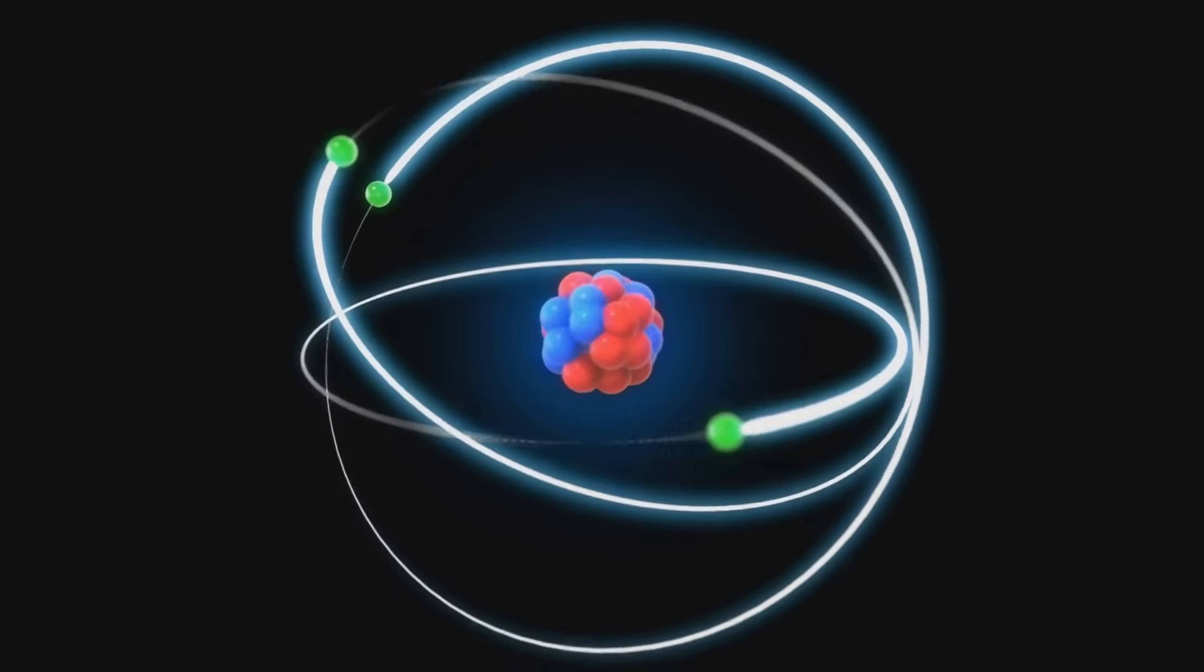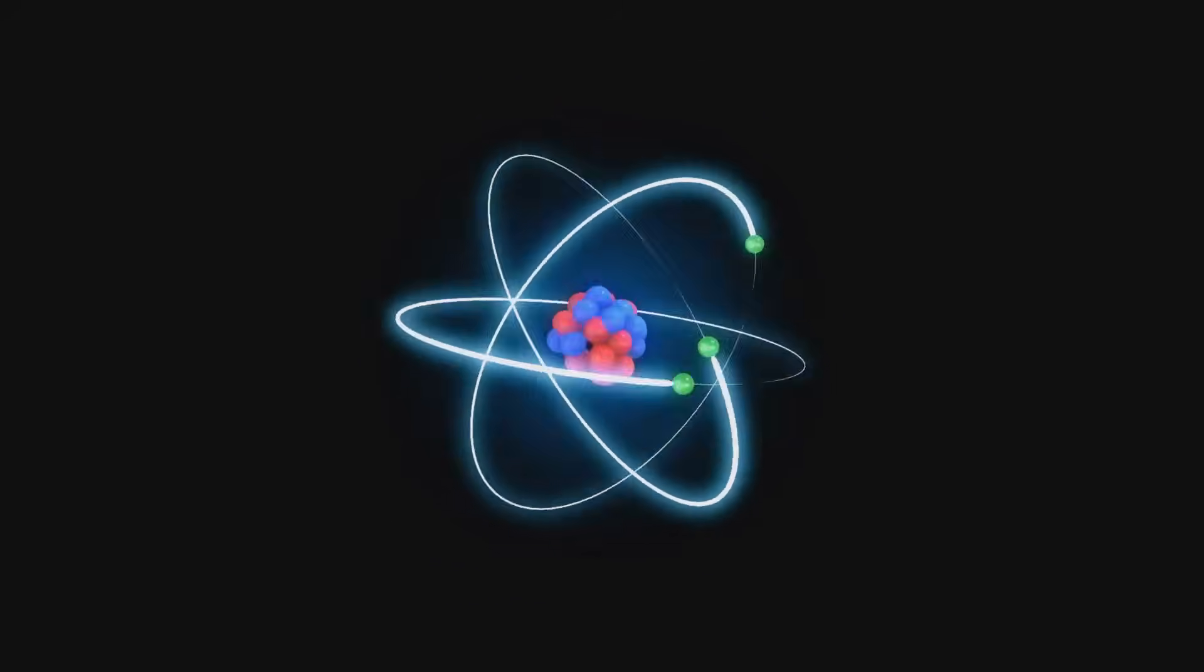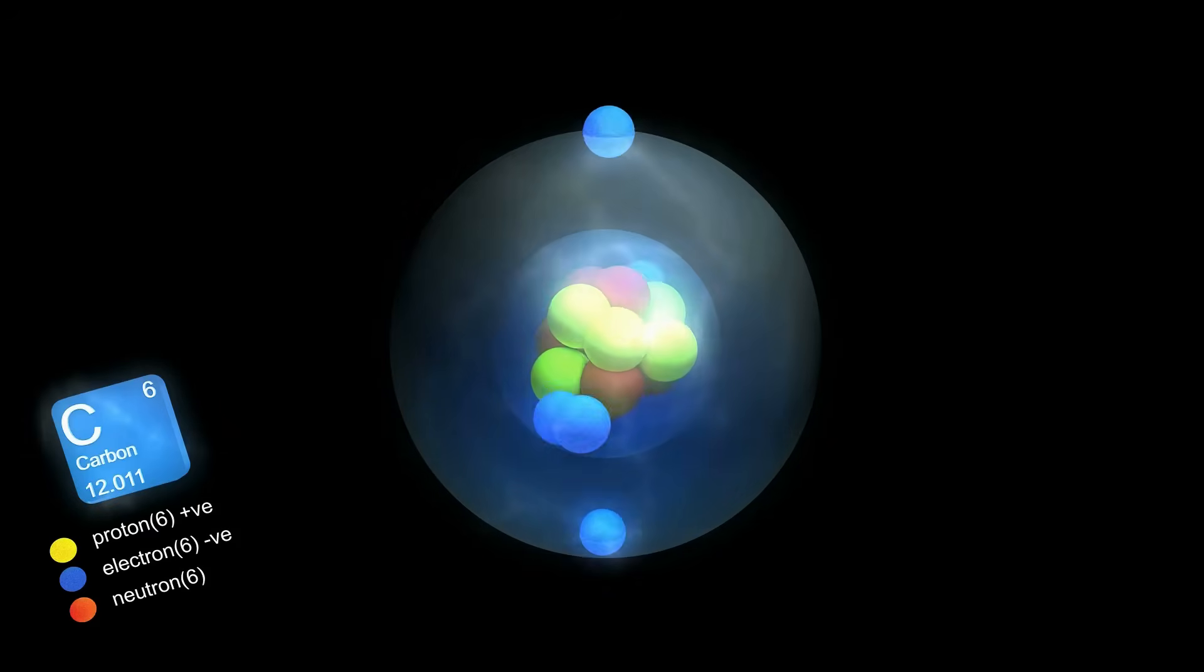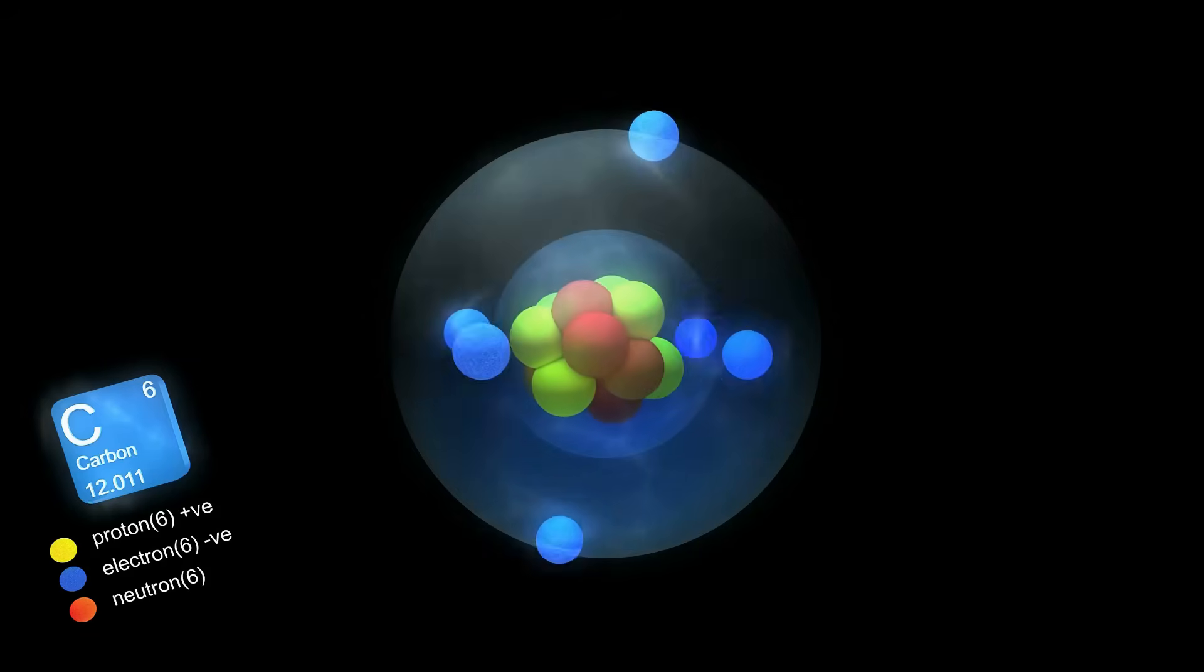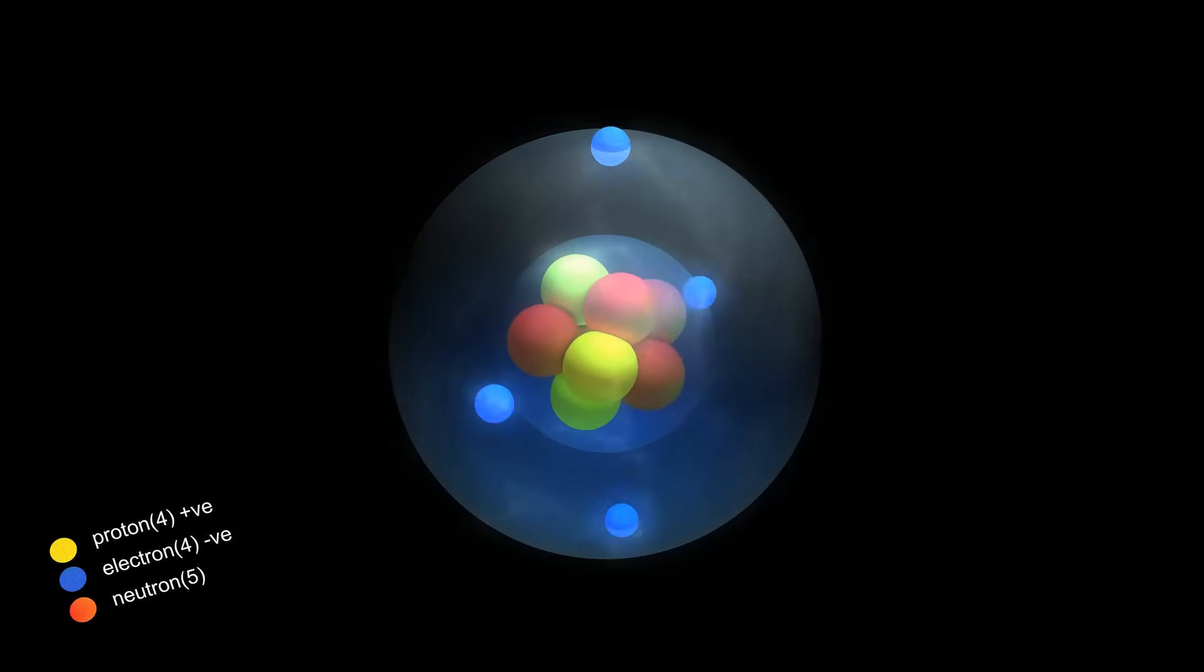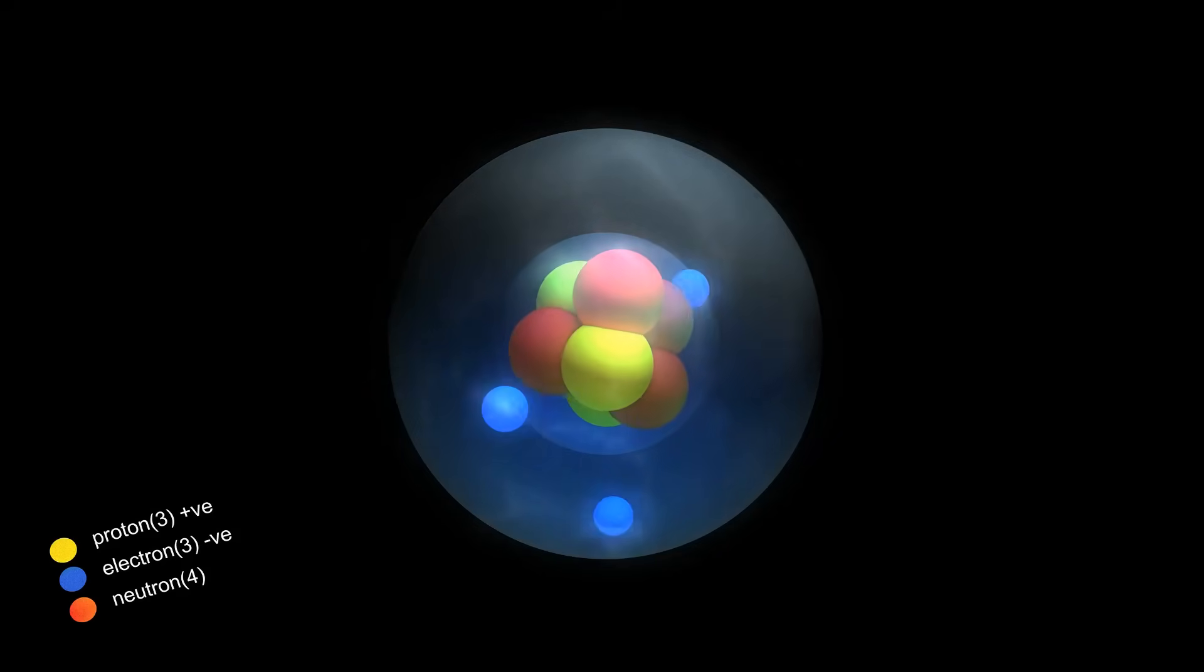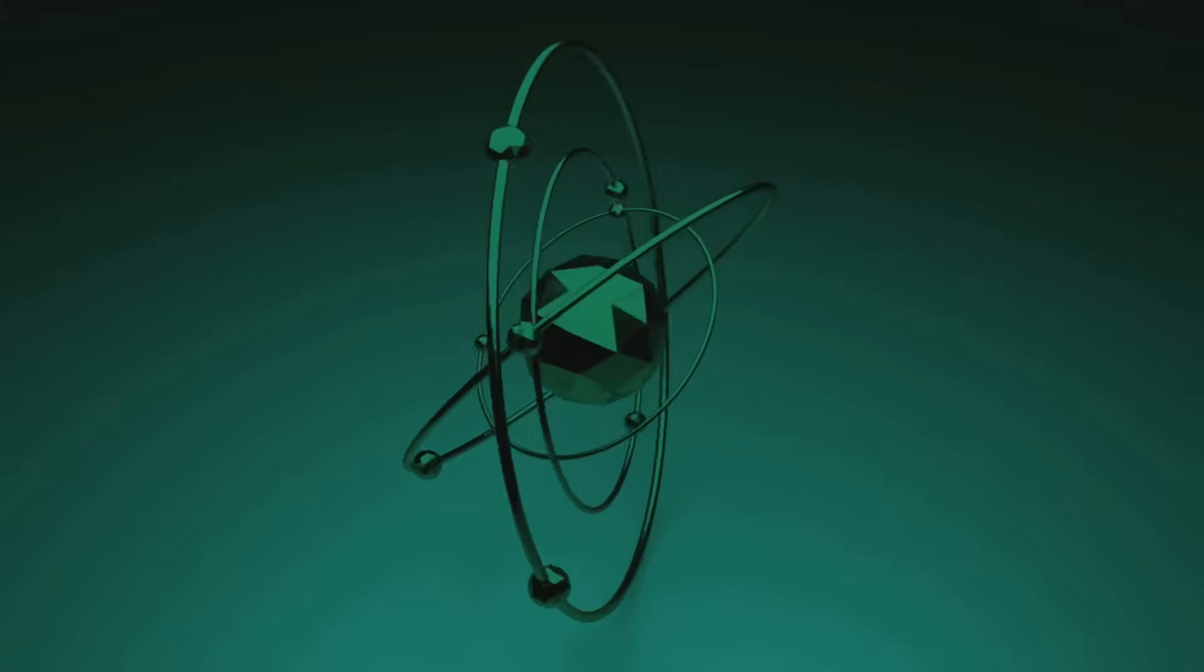Atoms are the building blocks of matter, composed of a nucleus with protons and neutrons, and orbiting electrons. Protons are positively charged particles in the nucleus that define the element, like carbon having six protons. Neutrons are neutral particles in the nucleus that stabilize the atom. Electrons are negatively charged particles in energy shells. Their movement between shells emits or absorbs photons, which are light particles.